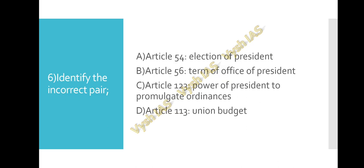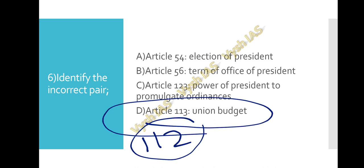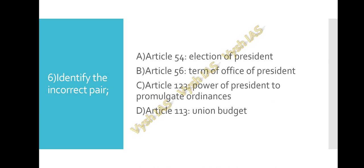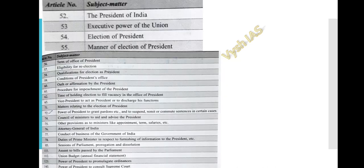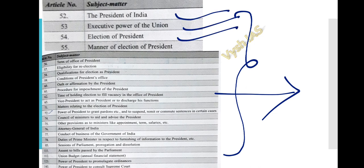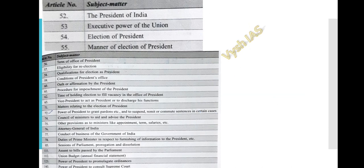Question number six: Identify the incorrect pair. Article 54 — election of President; Article 56 — term of office of the President; Article 123 — powers of President to promulgate ordinances; Article 113 — Union Budget. Options A, B, and C are correct, but option D is wrong because Article 112 speaks about the Union Budget, not Article 113. These types of questions appear frequently, so learn all the articles. I've attached the articles related to the President from the Laxmikant book — Article 52 (President of India), Article 53 (Executive power of the Union), Article 54 (Election of the President), Article 55 (Manner of election), and so on.